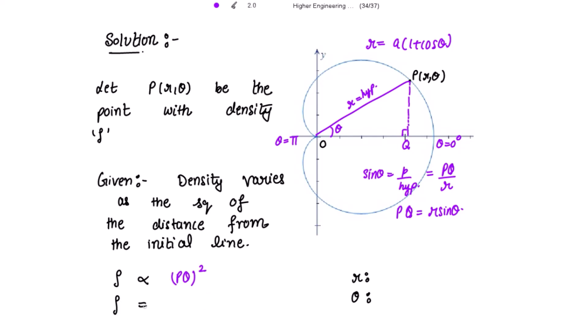So the density is varying as the square of the distance from the initial line, that is the square of PQ. That is, density equals mu times PQ squared, which is mu R squared sine squared theta. Now writing the limits for R and theta: R is varying from 0 to A into 1 plus cos theta, and theta varies from 0 to pi.